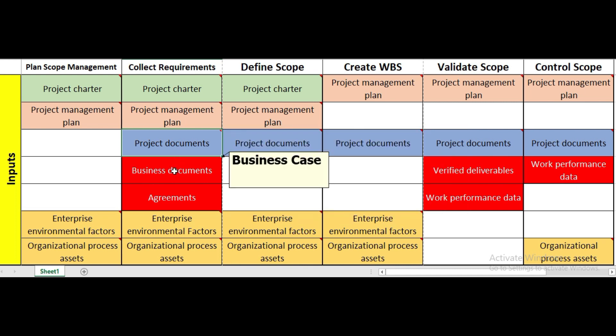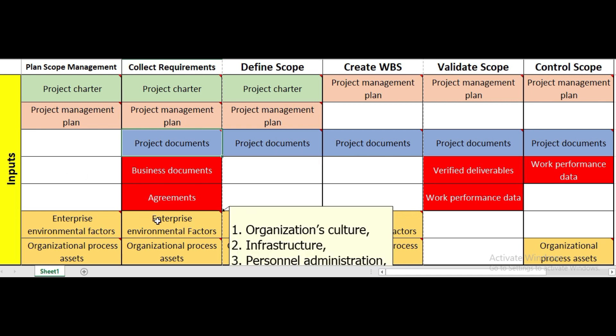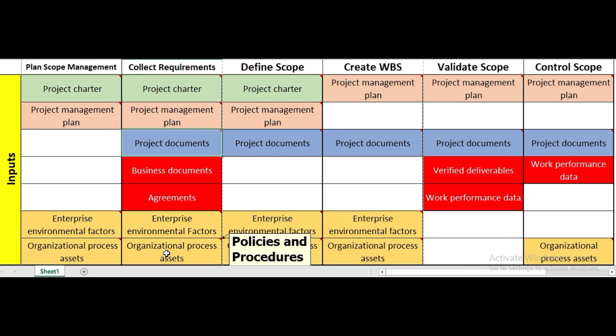Business documents specifically refer to the business case. Agreements tell us the different contract types we will be doing with clients. Enterprise environmental factors and organizational process assets are the same as studied in plan scope management.